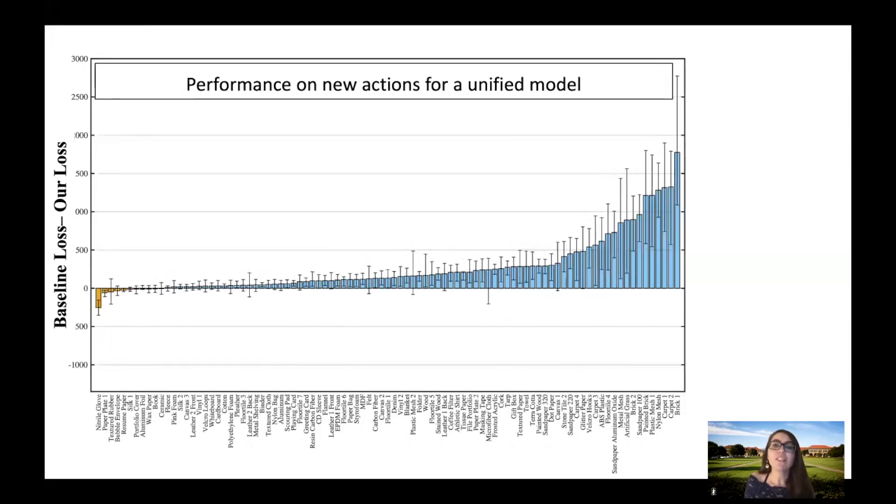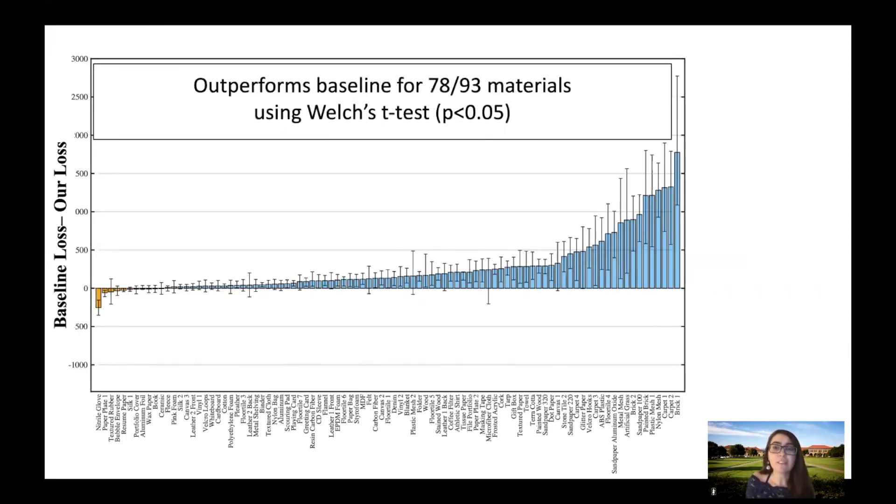Afterwards, we train the joint model for all the materials by adding a gel site image as an input to the model. To assess the generalization capabilities of this unified model only in its capabilities to generalize to new actions, we keep the gel site image input the same as one of the training set and use a new force and speed from the test set. This would be similar to a scenario where the material's label is known and one is trying to render it given a new action. This unified model significantly outperforms the baseline on 78 out of 93 materials using Welch T-tests.